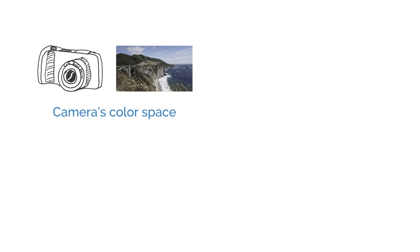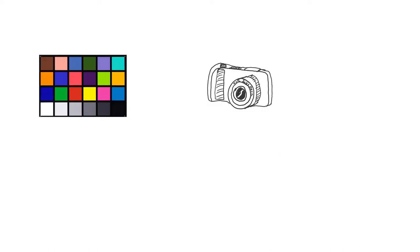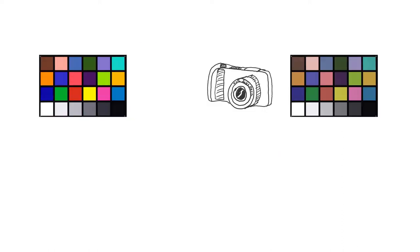These sensor dependent color values are corrected by using a color correction matrix. A color correction matrix maps the colors from a camera's color space into a standard color space. This matrix is computed by taking pictures of color charts and solving for a 3x3 matrix that minimizes the error between the actual and produced colors.